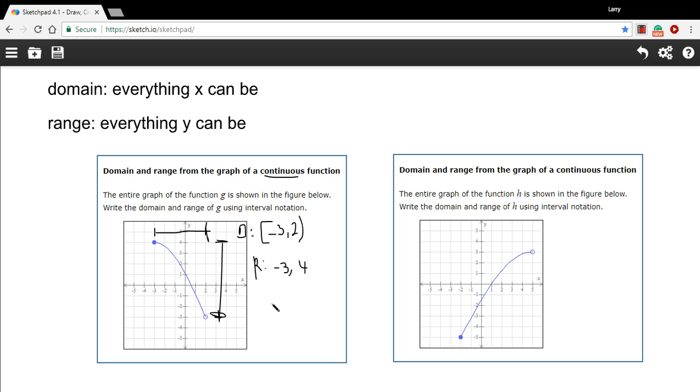The negative 3 is not included because that's an empty circle, so we use the rounded bracket. And the 4 is included because that's a filled circle, so we use the square bracket. So that's the domain and range in interval notation for this continuous function.